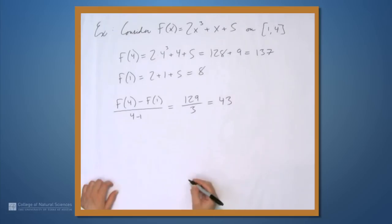So the mean value theorem says that the derivative of f must take on the value 43 in at least one place in the interval from 1 to 4. So let's verify that.